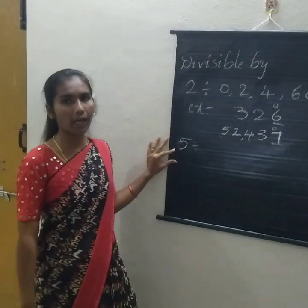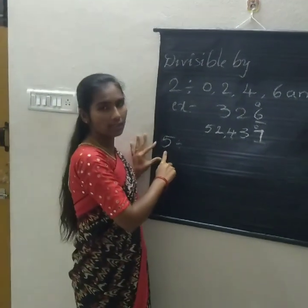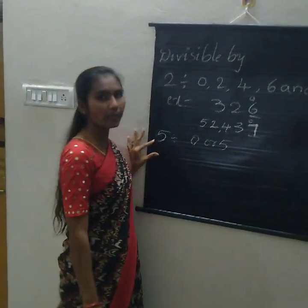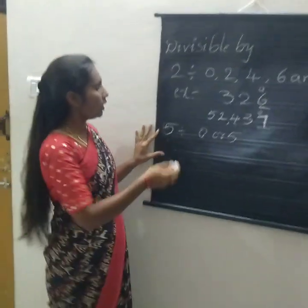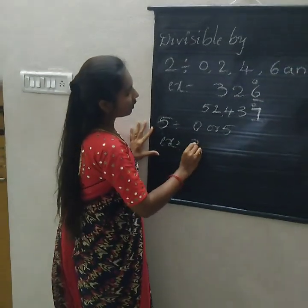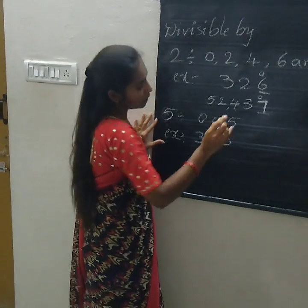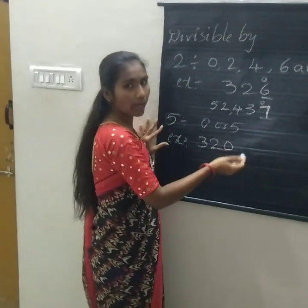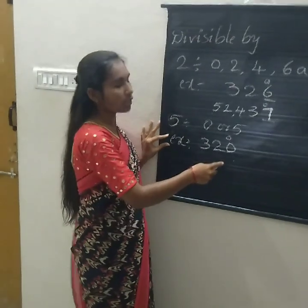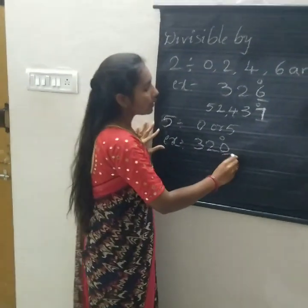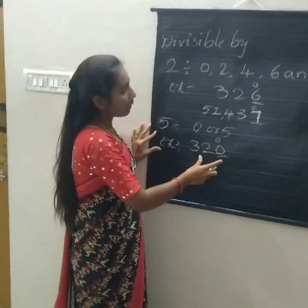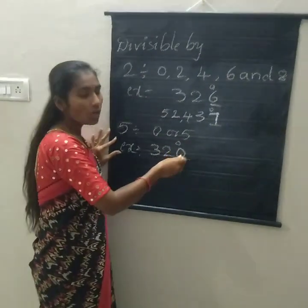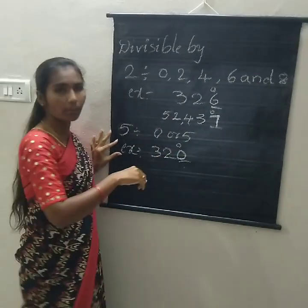The divisibility of 5 rule is: the one's place should be 0 or 5. So I am taking one example: 320. We are checking the one's place. Which number is there in the one's place? 0. So this number is divisible by 5. The one's place is 0, so 320 is divisible by 5.